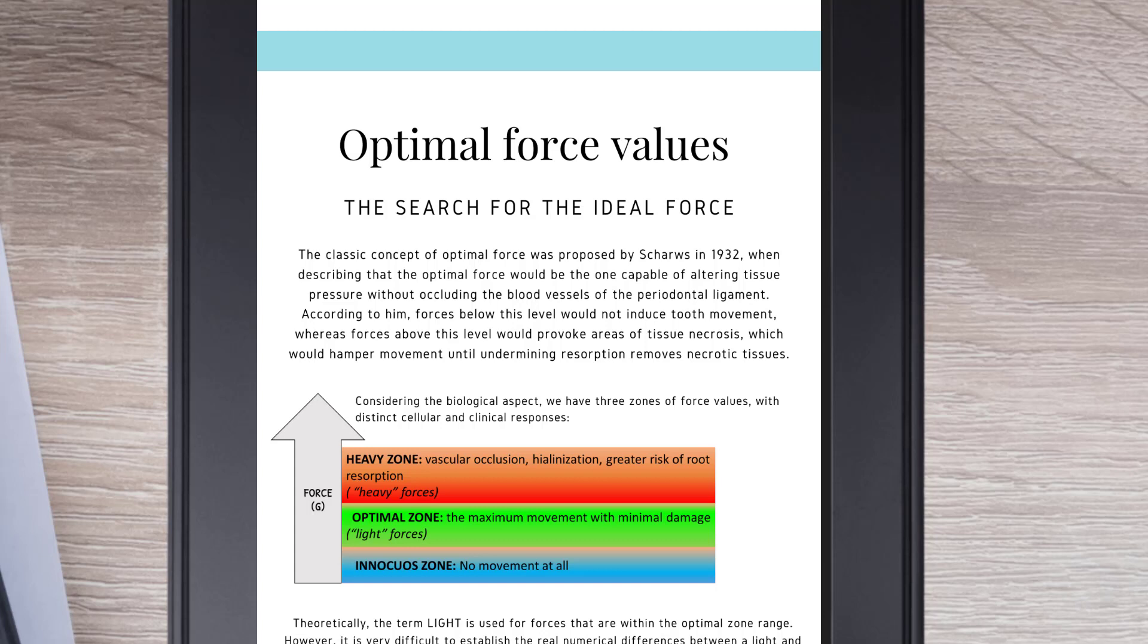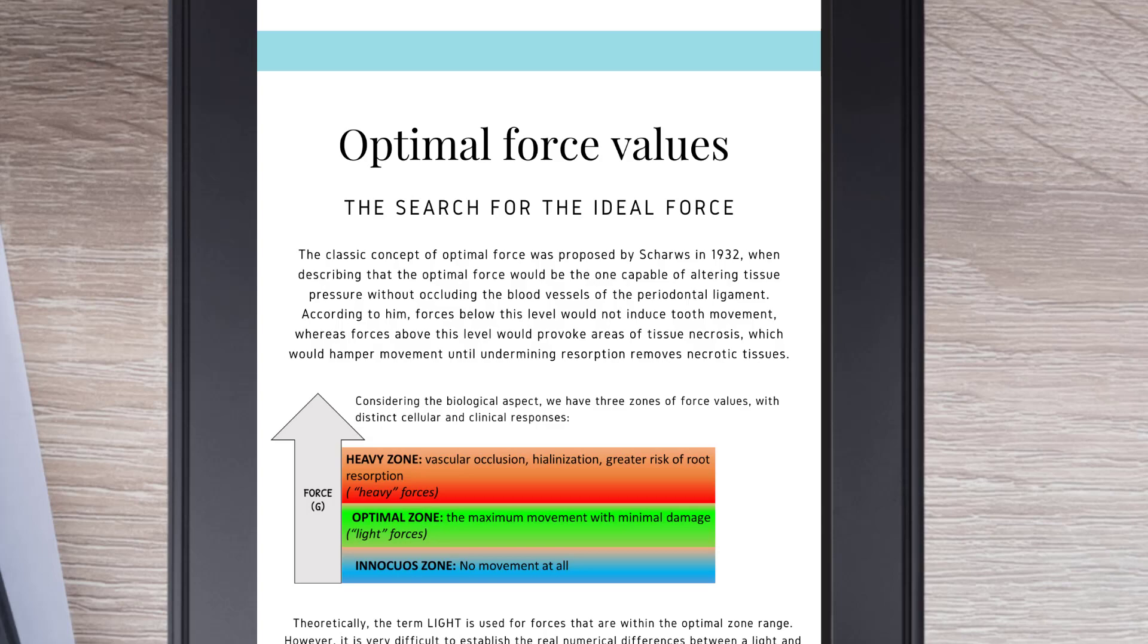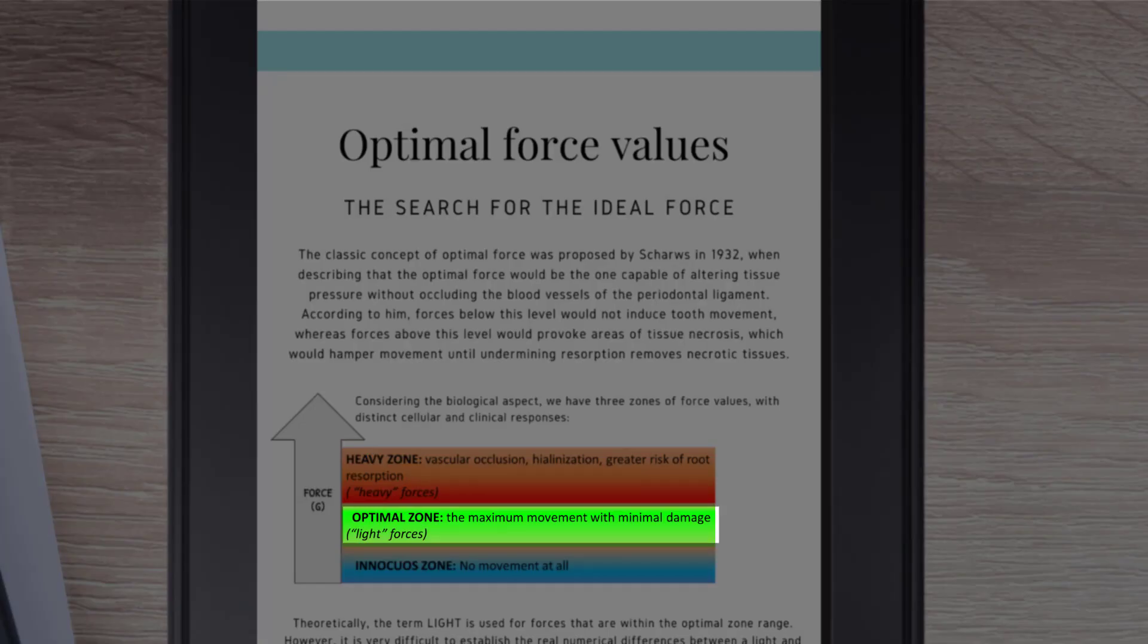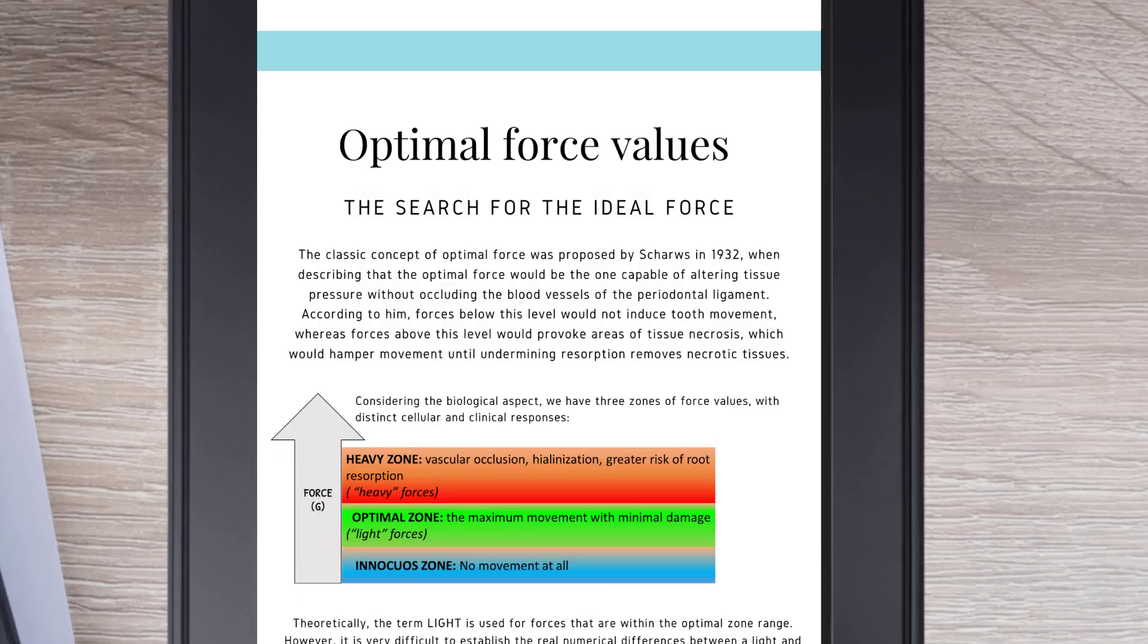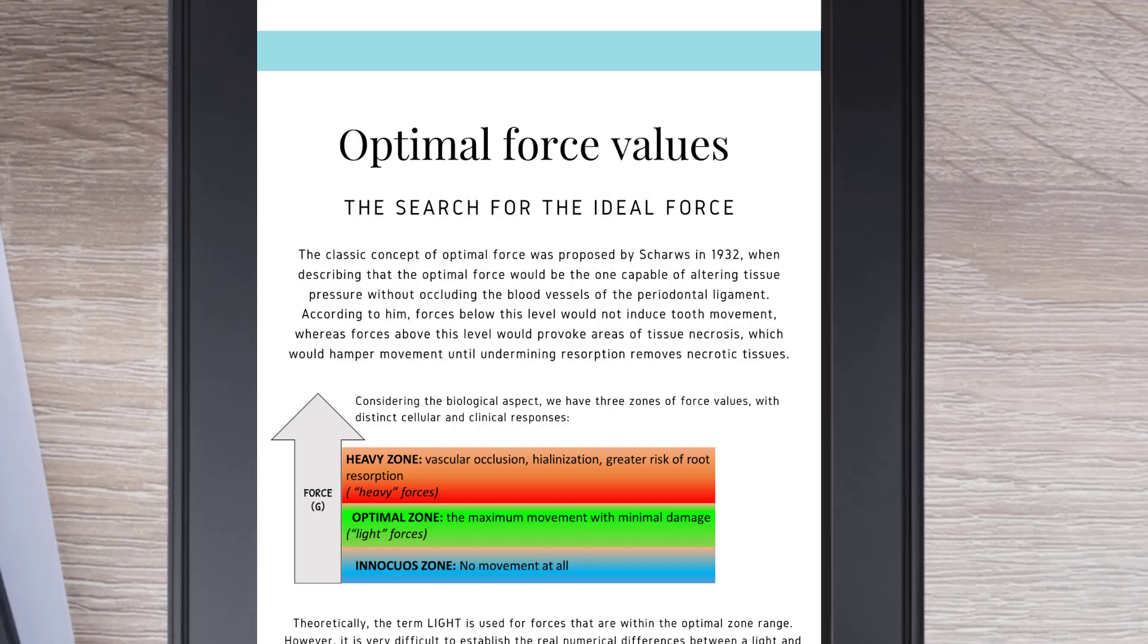Considering the biological aspect, we have three zones of force values with distinct cellular and clinical response. In the innocuous zones, we have very low forces with no movement at all. In the optimal zone, we have the maximum movement with minimal damage. These would be considered light forces. And in the heavy zone, we have the heavy forces, which will probably cause vascular occlusion, high hyalinization and greater risk of root resorption.